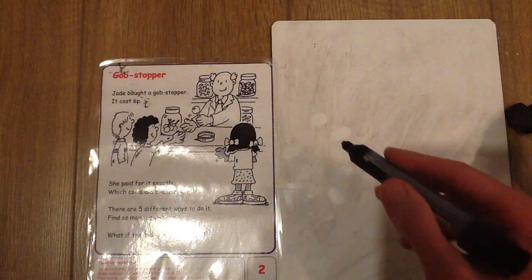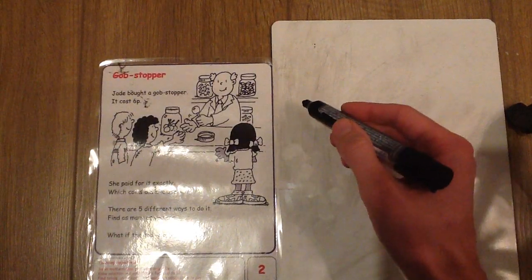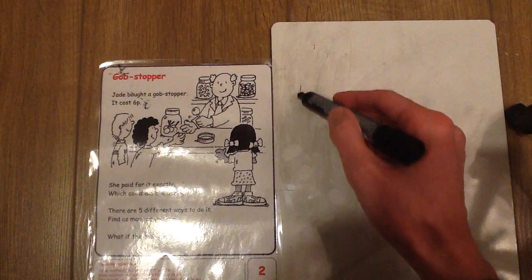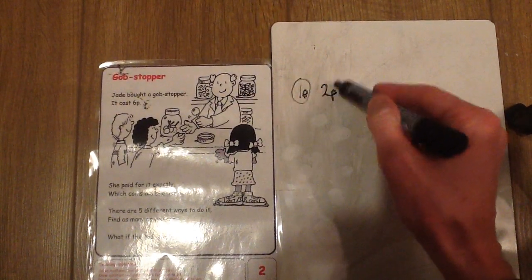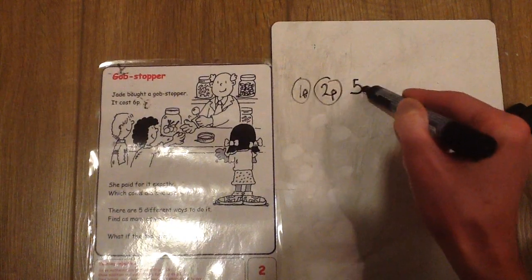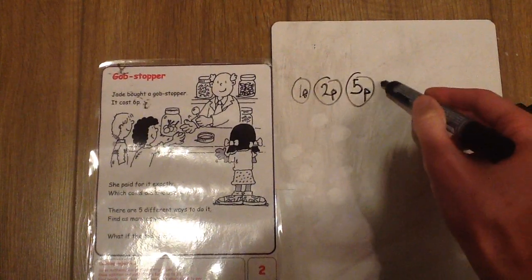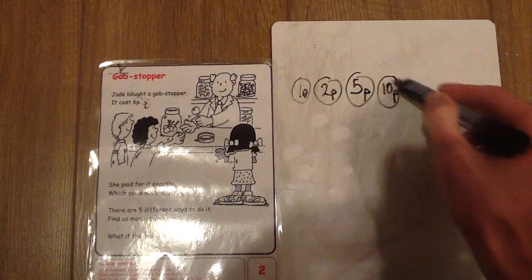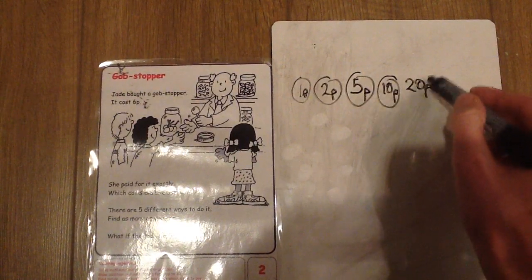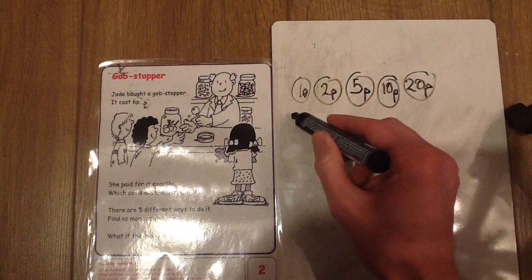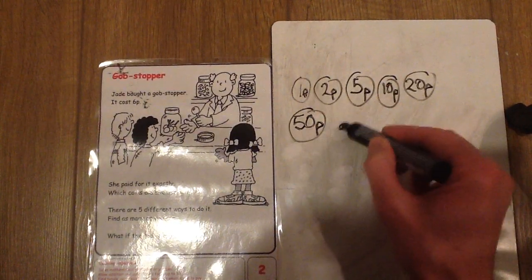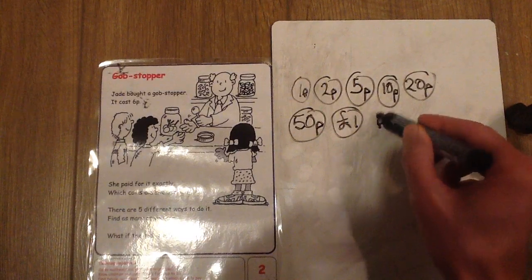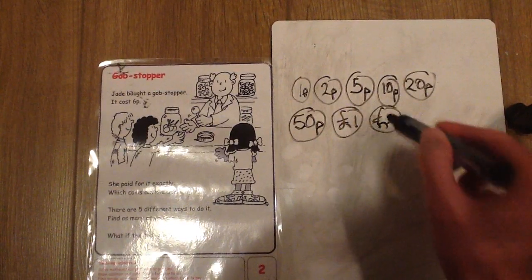Let's go back to the original question. It costs 6p. So we've got to think about the different types of coins there are. So there's a 1p coin, 2p coin, 5p coin, 10p coin, 20p coin, 50p coin, a £1 coin and a £2 coin.